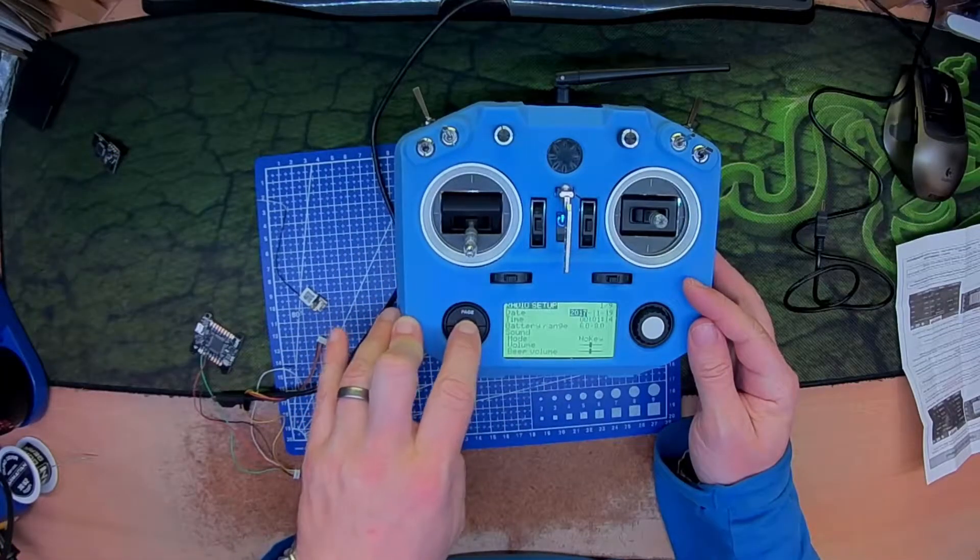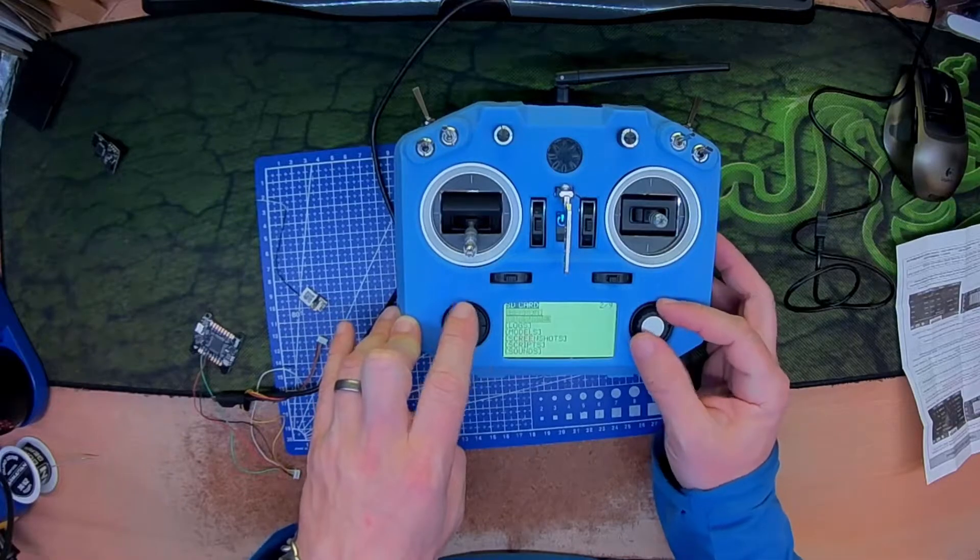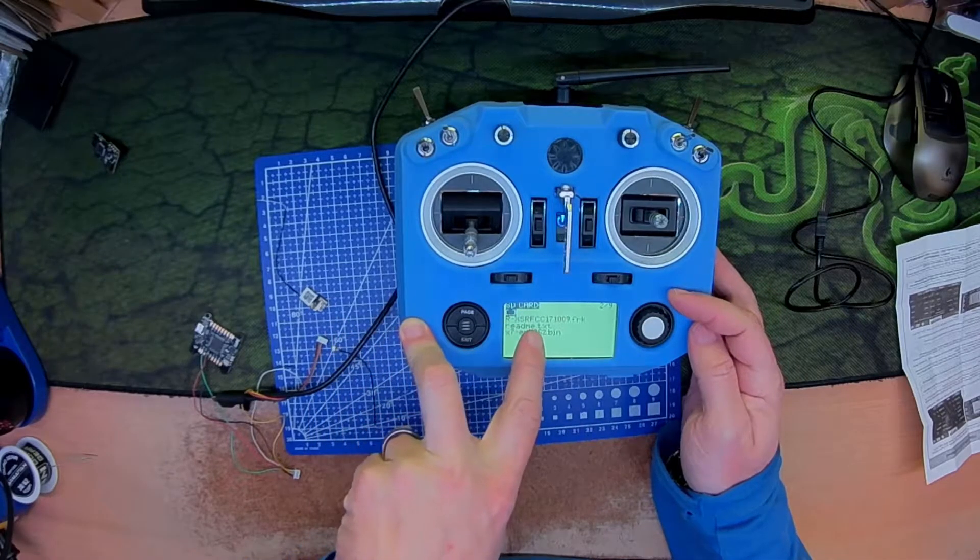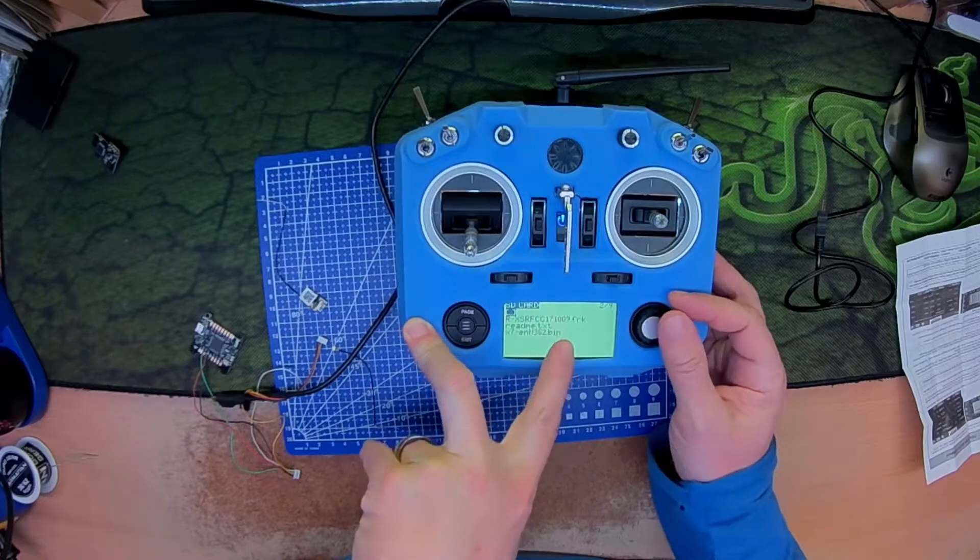Long press on menu, page once, just check the firmware showing up. RXSR FCC 17, 10, 0, 9, FRK. Okay.